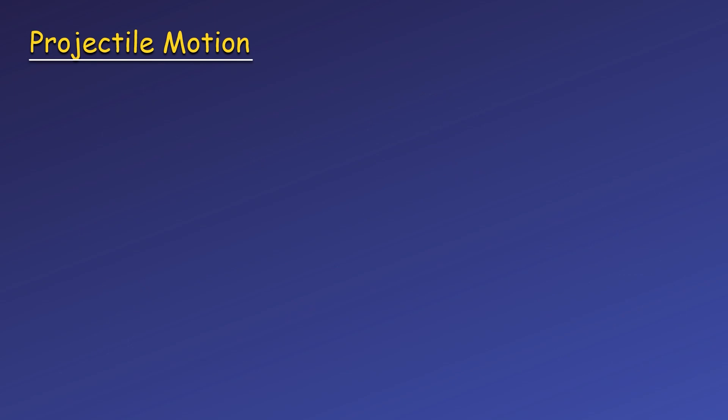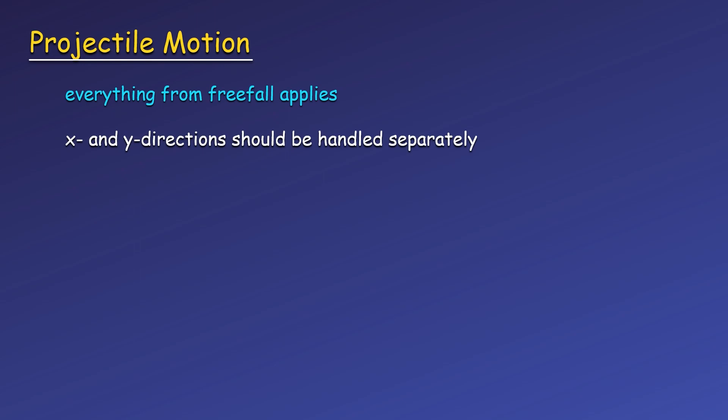I want to say a few things to keep in mind about projectile motion and solving problems. First, projectile motion is an extension of free fall motion, so everything from free fall applies and you should not forget all of the things you typically look for in free fall problems. Since our object is moving in two dimensions, our position, velocity, and acceleration all have x and y components. We take care of the x and y directions separately and use kinematic equations for each direction separately, carefully labeling subscripts and not mixing directions within an equation.